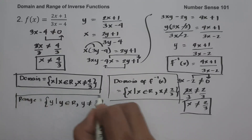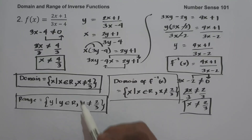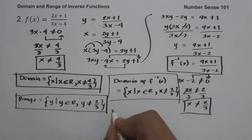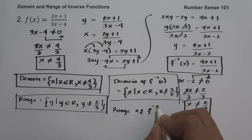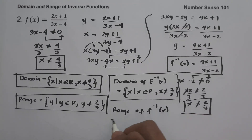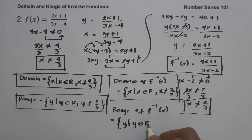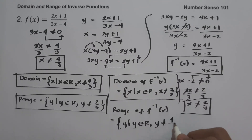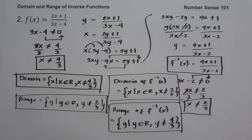This is the range of the original function. And to find the range of the inverse function, we use the domain of the original function. So the range of the inverse function is the set of y values such that y is the set of all real numbers except 4 over 3. This is the range of the inverse function.